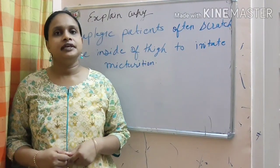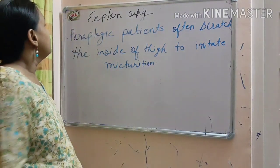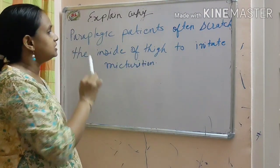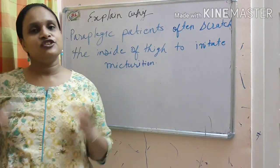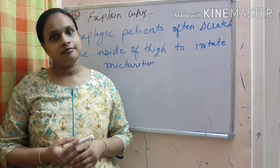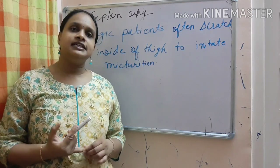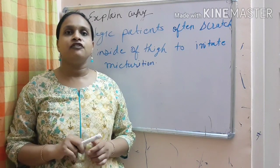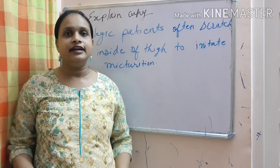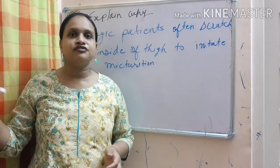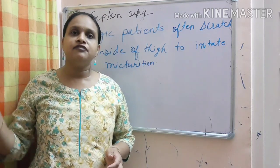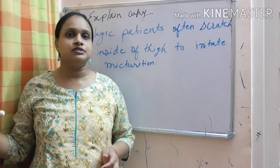Next question is, explain why paraplegic patients often stretch the inside of thigh to initiate micturition. First of all, tell me, what is paraplegic? Paraplegia is paralysis of both the lower limbs. Whereas hemiplegia is paralysis of the half of the body. One upper limb and one lower limb of the same side.